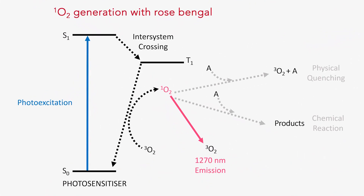Rose-Bengal is a common photosensitizer for generating singlet oxygen. In this process, the photosensitizer molecule is excited by visible light into a singlet state, and then moves into a triplet state via inter-system crossing. This excited triplet state is short-lived, lasting only a few microseconds. During this time, it can interact with molecular oxygen in the solution to generate singlet oxygen, or ¹O₂.